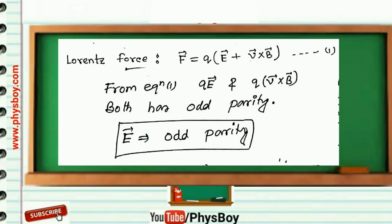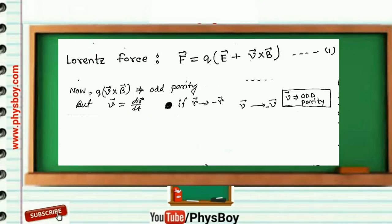So under parity transformation, v⃗ is also odd parity. So we see that v⃗ is odd, B⃗ is even, and the whole term becomes odd parity.